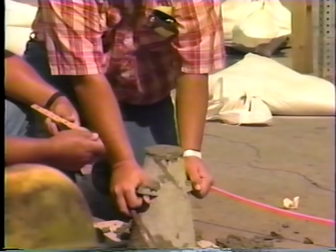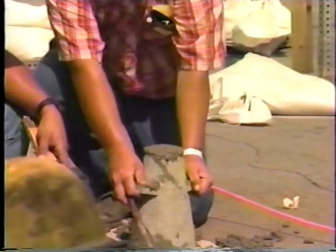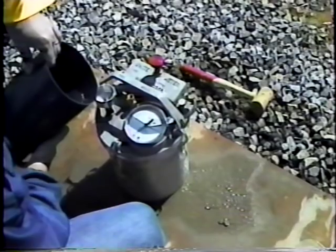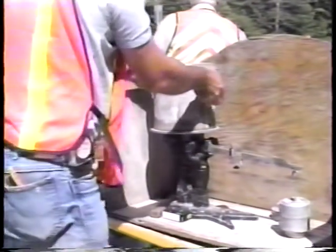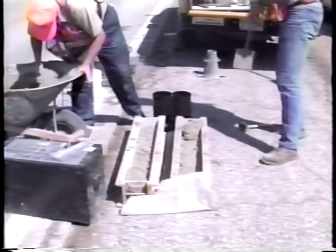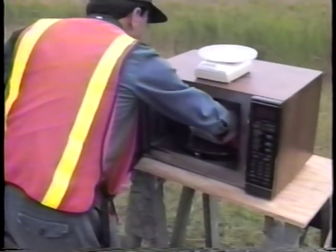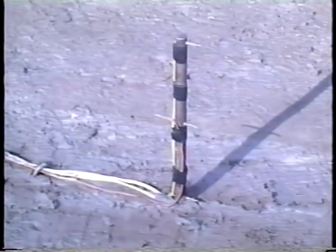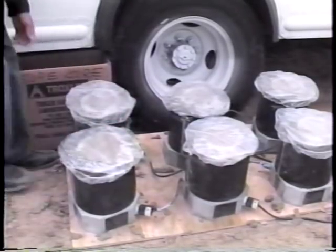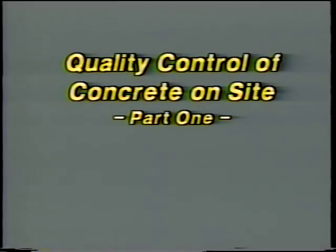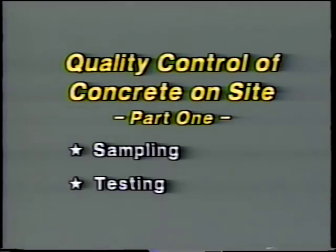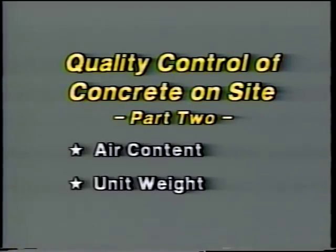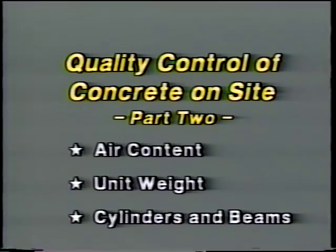Verification is provided by conventional control tests performed in the field. This presentation is the first of four videotapes on quality control of concrete on site. Here in part one and in part two are presented the conventional control tests for determining concrete quality at the job site. In parts three and four, you'll see new quality control procedures developed by Sharp and others for testing concrete both before and after it's cast. Here in part one, we'll look at sampling concrete and at the test methods for temperature and slump. In part two, we'll look at the test methods for air content and unit weight, as well as the procedures for making cylinders and beams.